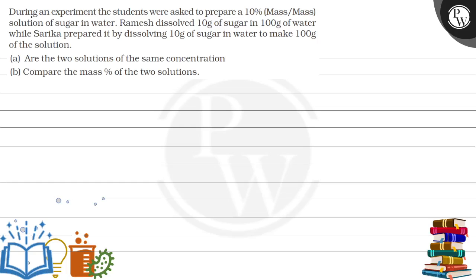Let's see this question. During an experiment, the students were asked to prepare a 10% mass-by-mass solution of sugar in water. Ramesh dissolved 10g of sugar in 100g of water, whereas Sarika prepared it by dissolving 10g of sugar in water to make 100g of the solution.